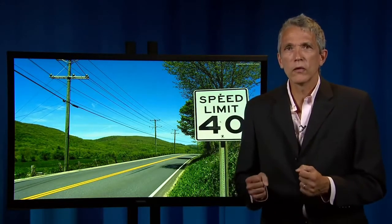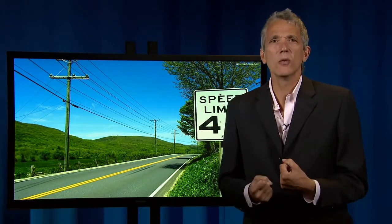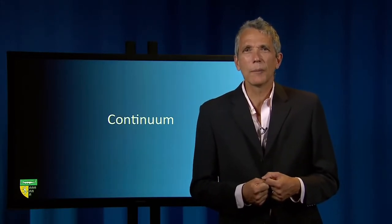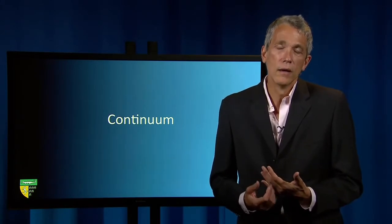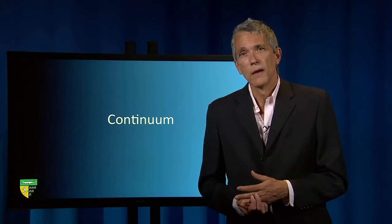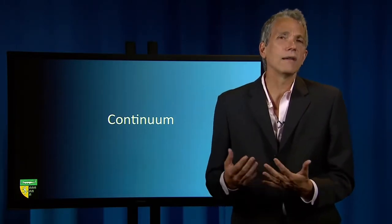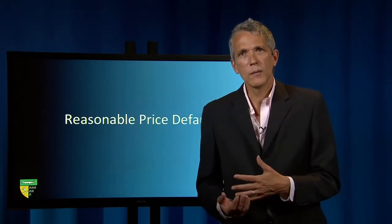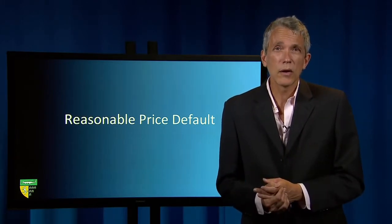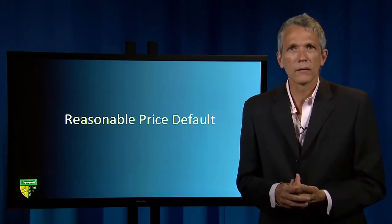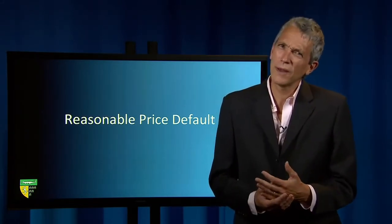You should also understand that while the rules versus standards distinction is presented as a dichotomy, it's often more of a continuum. Consider the law regarding the contract price in the absence of an expressed term. On the standards end of the spectrum, contract law might establish that the default price should be a reasonable price, depending on the totality of the circumstances. At the rule end, a jurisdiction might specify that the price will be $100. Somewhere in the middle would be a rule that says the default price is the market price on the day of performance.